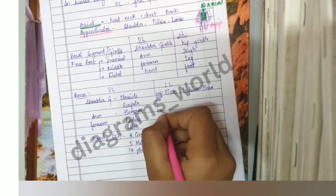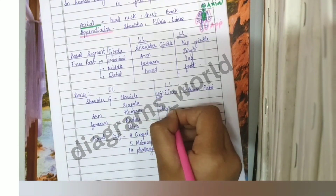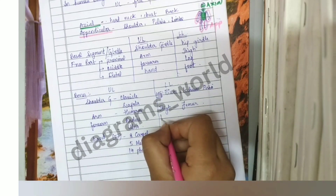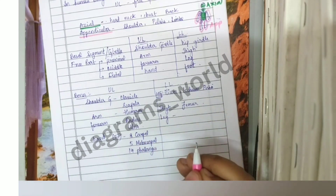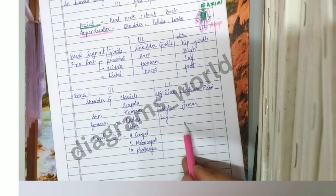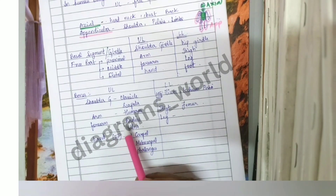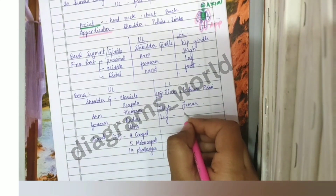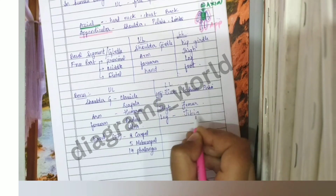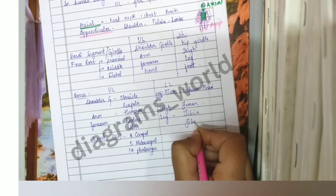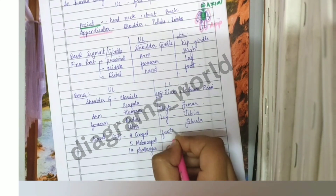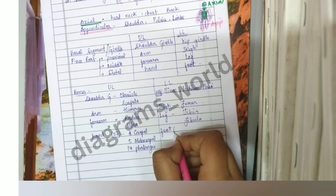In the thigh region we have the femur. In the leg region we have two bones — just as the forearm also had two bones, showing that the upper limb is homologous to the lower limb. In the leg, those two bones are the tibia and fibula. In the foot we have 26 bones.